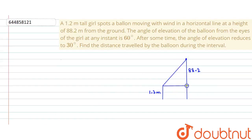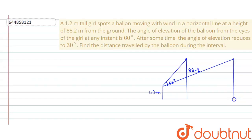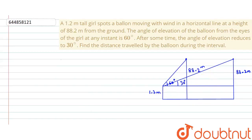I will join this line and this line — this angle of elevation is 60 degrees. After some time the angle of elevation reduces to 30 degrees, so the balloon has travelled some distance and is now at a new position. Since the balloon is moving in a horizontal line, this height is also 88.2 meters. This second angle of elevation is 30 degrees.